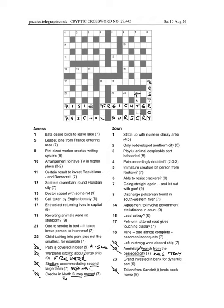And then 19 down, left in strong wind aboard ship, well a strong wind is a gale, and left going in, there's another L going in there, and if you're aboard, are you aboard, are you on, you could say, and so we have on, and that gives us galleon, which is obviously a type of old ship.